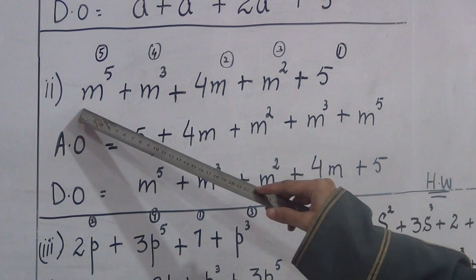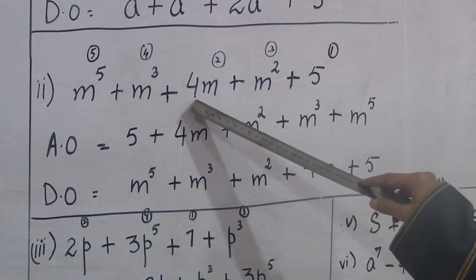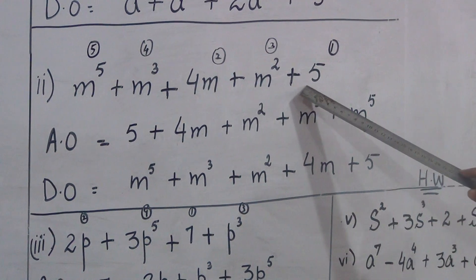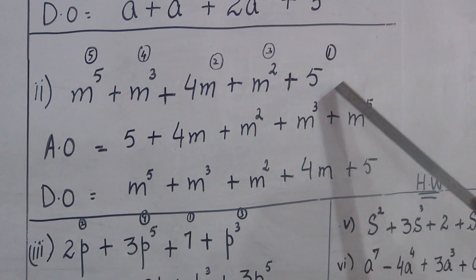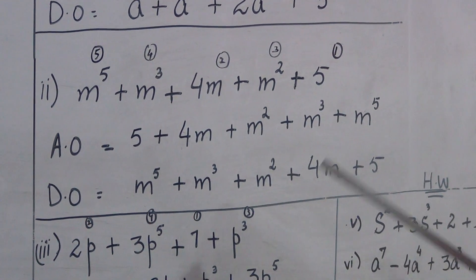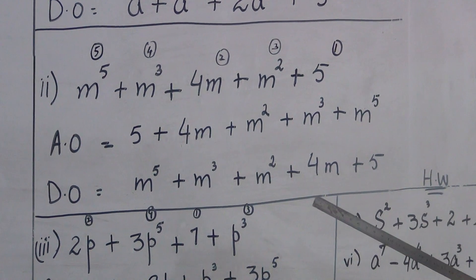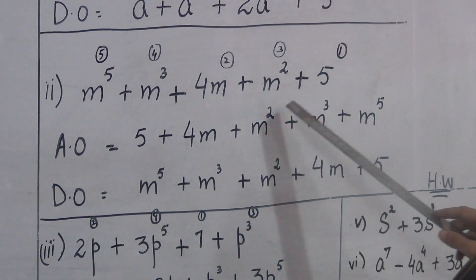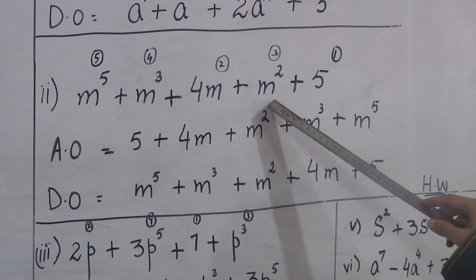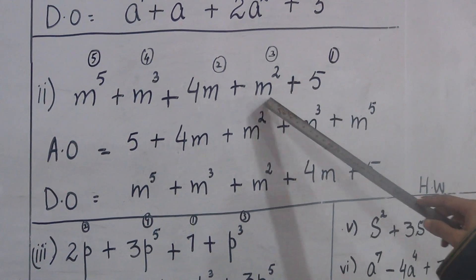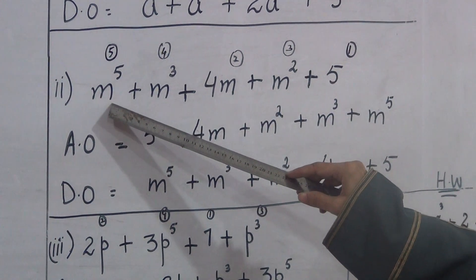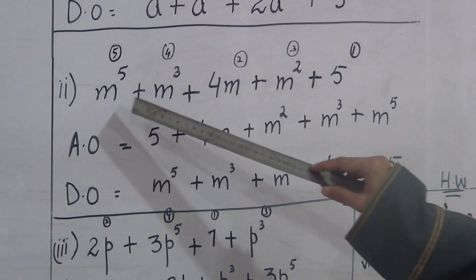This is the first term, this is the second term, this is the third term, this is the fourth term, this is the fifth term. We have to arrange this in ascending order. We have to learn how to arrange according to the power of the variable. m is the variable.